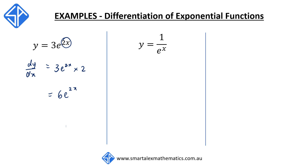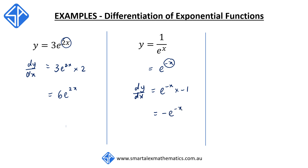Our second example is y is equal to 1 on e to the x. Using our index law, we can write this as e to the negative x. When we differentiate this expression, everything stays the same, but we multiply by the derivative of negative x, which is negative 1. So dy/dx will be equal to minus e to the negative x.